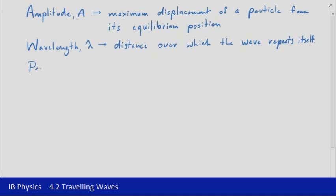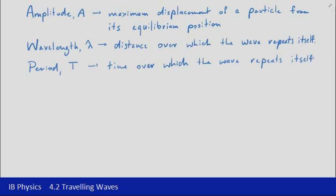The next quantity is the period, which is similar to wavelength but slightly different — it's not the distance, it's the time over which the wave repeats itself. With distance you'd grab a ruler and measure how far it is between adjacent peaks. With period you'd grab a stopwatch, look at a particular point in space, and time from the passing of one peak to the passing of the next peak. The SI units for time are seconds, so period would usually be measured in seconds.